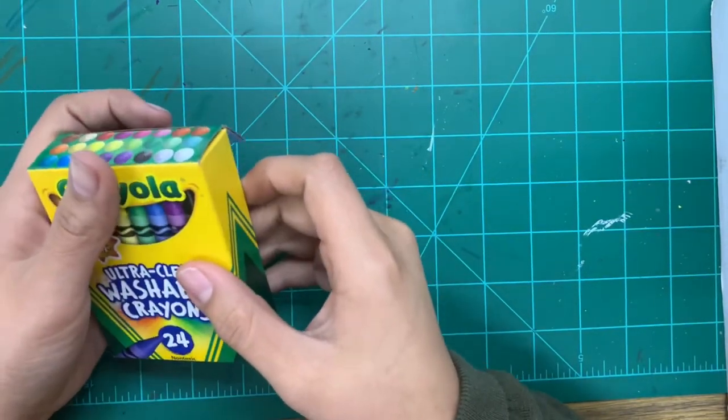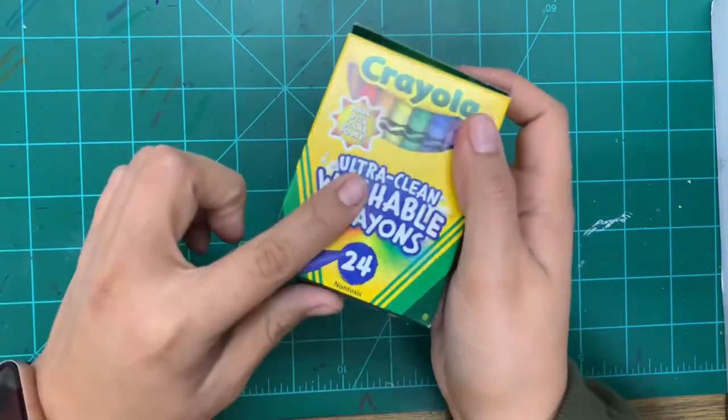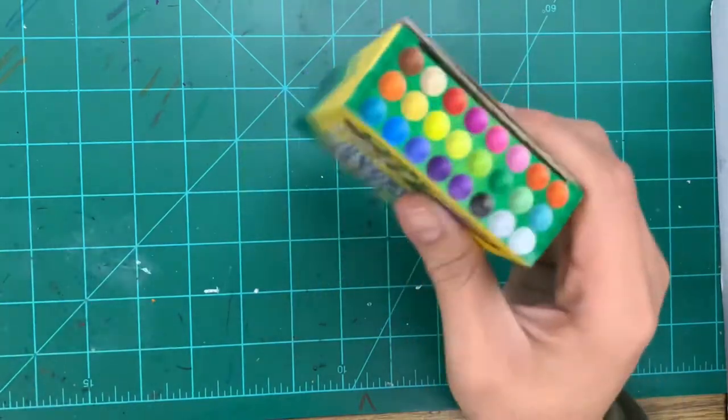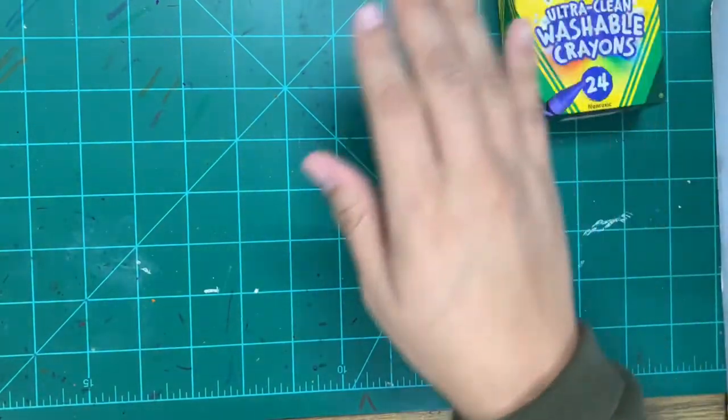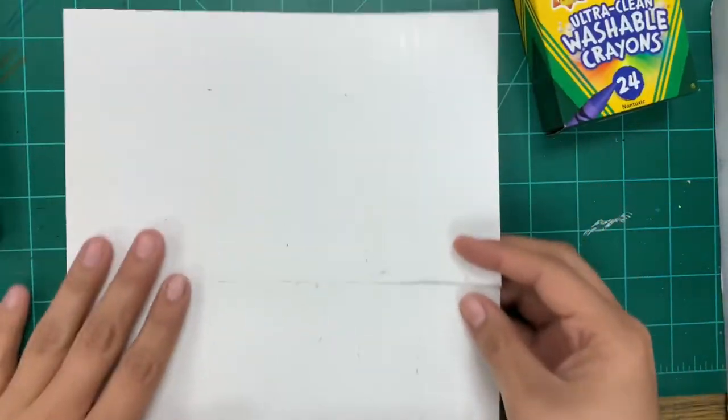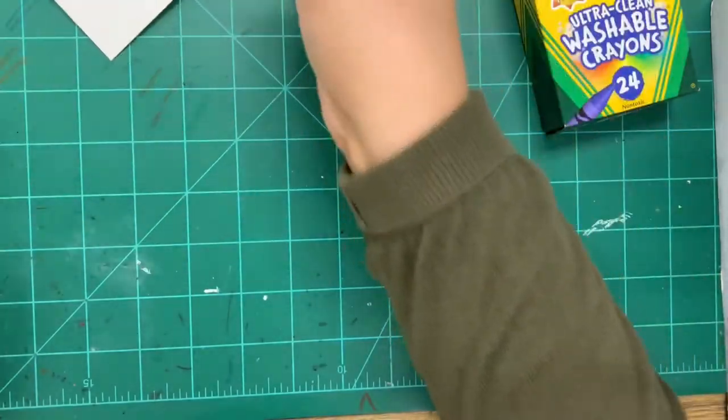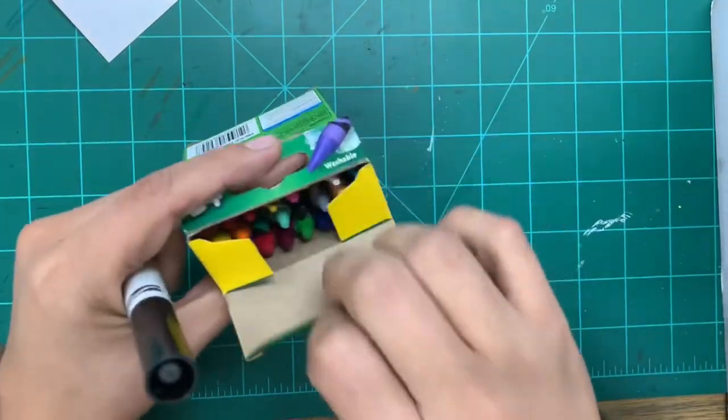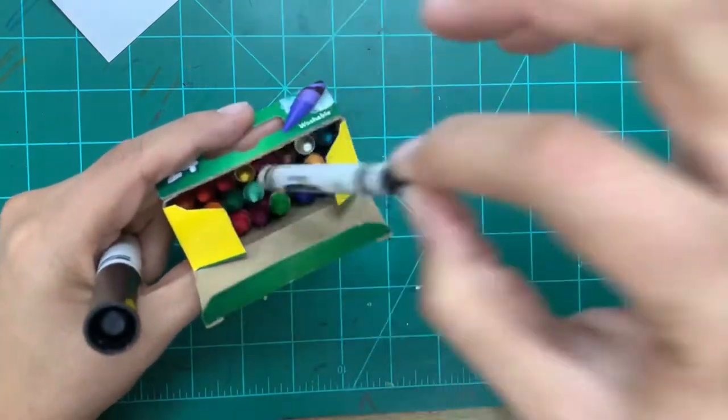For this project, these are all the materials that we're going to be needing. We're going to be needing crayons. I just have a very basic 24-pack of crayons. I feel like most of us get this in our school supply box.